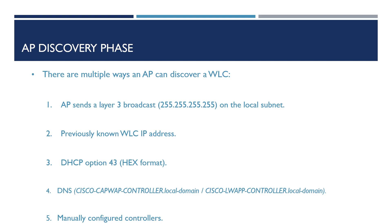Next, the AP will try and resolve the following DNS records: Cisco-capwap-controller and Cisco-lwapp-controller. If there are any records configured for these within DNS, the AP will use the resolved IP address to try and join the wireless controllers. Finally, if there are any manually configured controller IPs on the AP that have been configured via CLI, the AP will attempt to join these controllers also.